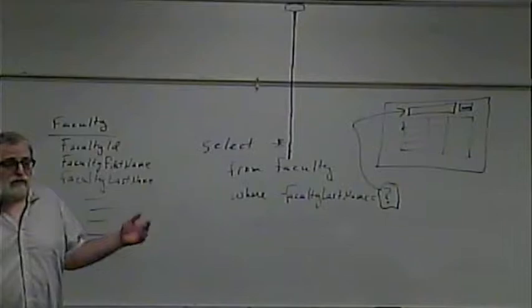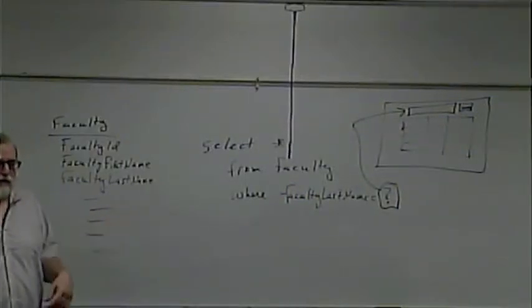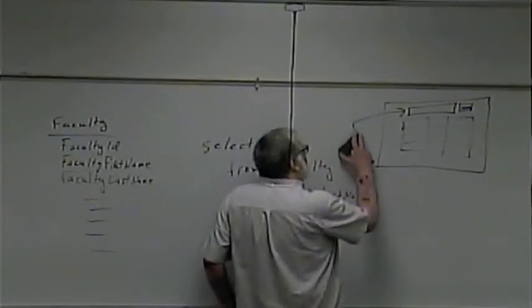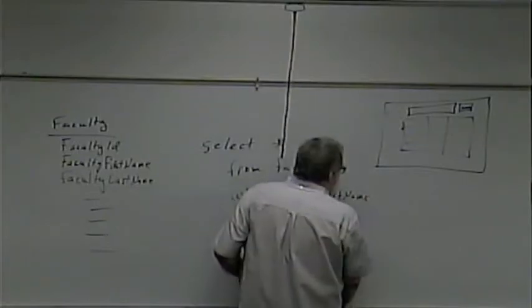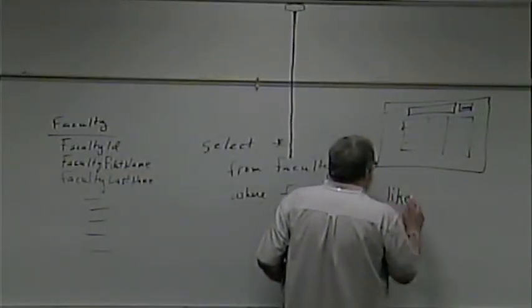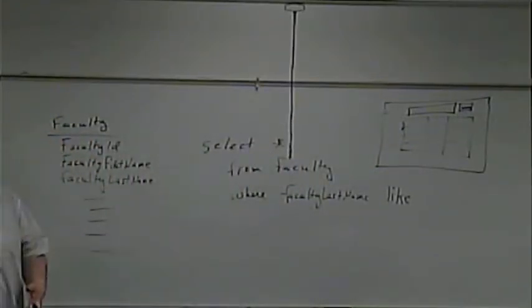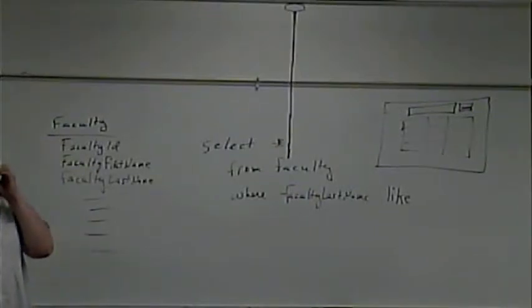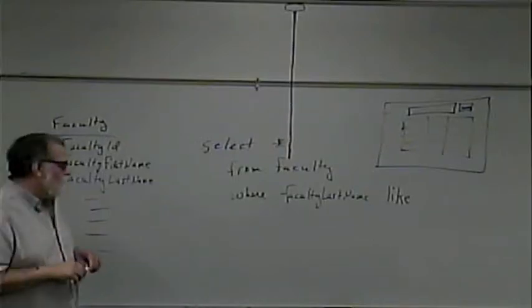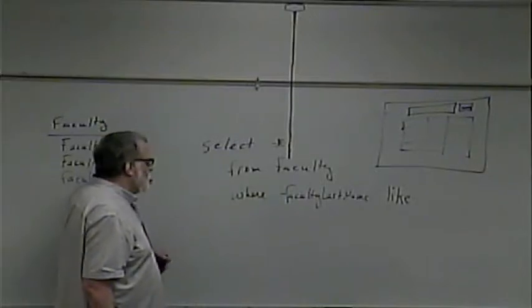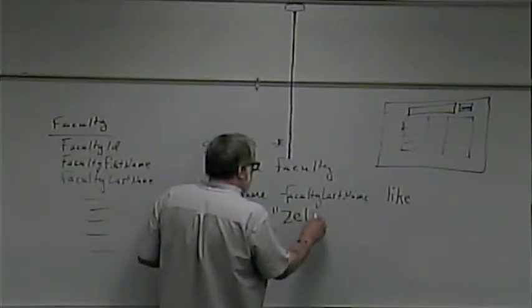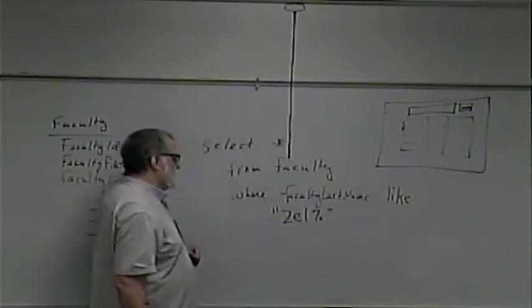That should be more or less review. We haven't done exactly this, but it's the same concept as before. But what if we want an approximate match? For an approximate match, we can put in a wildcard. We don't use an equal sign — we use the word LIKE. So: give me the faculty where the last name is LIKE something. If we wanted it to start with Z-E-L, we'd say LIKE 'ZEL%' — that percent sign is the wildcard.